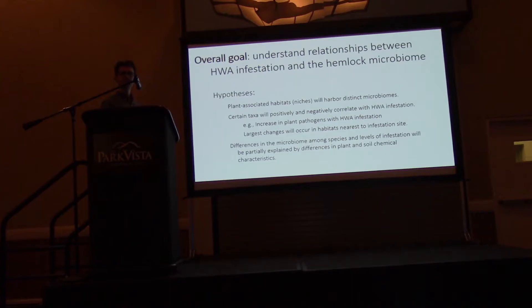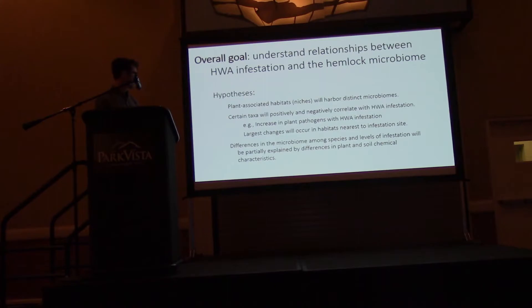Certain taxa will respond positively and negatively to hemlock woolly adelgid. Specifically, we think that plant pathogens might increase with hemlock woolly adelgid because plant defense is somewhat compromised from this disturbance. We also hypothesized that the largest changes will occur in habitats nearest to the infection site — so in these above-ground habitats. And then these differences in the microbiome will be partially explained by plant and soil chemistry, because hemlock woolly adelgid disrupts nutrient flow throughout the plant.